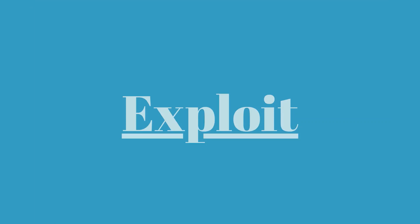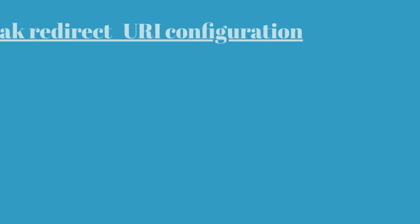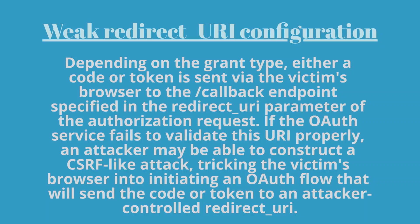Now we have understood OAuth 2.0, let's see how to exploit it. Weak redirect URI configuration: depending on the grant type, either a code or token is sent via the victim's browser to the callback endpoint specified in the redirect URI parameter of the authorization request. If the OAuth service fails to validate this URI properly, an attacker may be able to construct a CSRF-like attack, tricking the victim's browser into initiating an OAuth flow that will send the code or token to an attacker-controlled redirect URI.